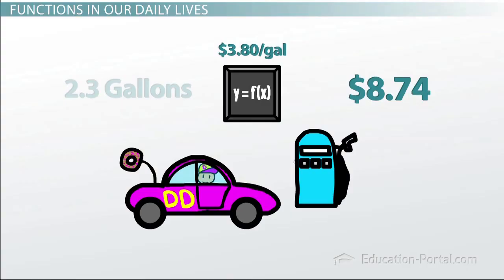Now how they determine the amount to charge is very simple. They use a function that maps the number of gallons that you pump to the number of dollars that you need to pay. So specifically, we say that the number of dollars you pay is a function of the amount of gas you buy.